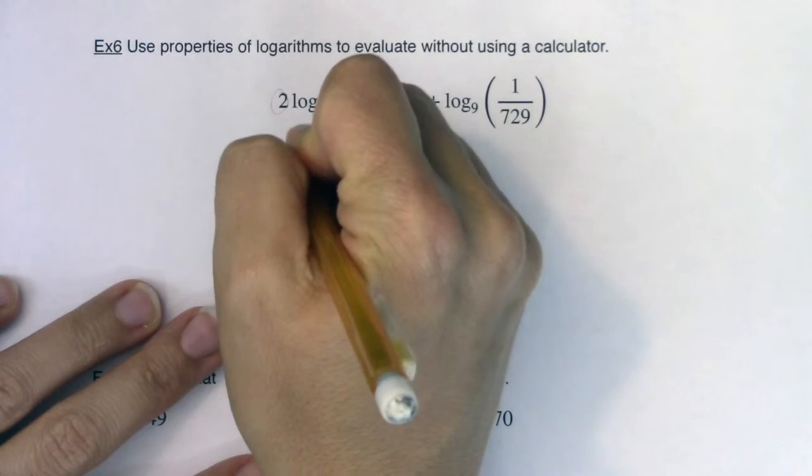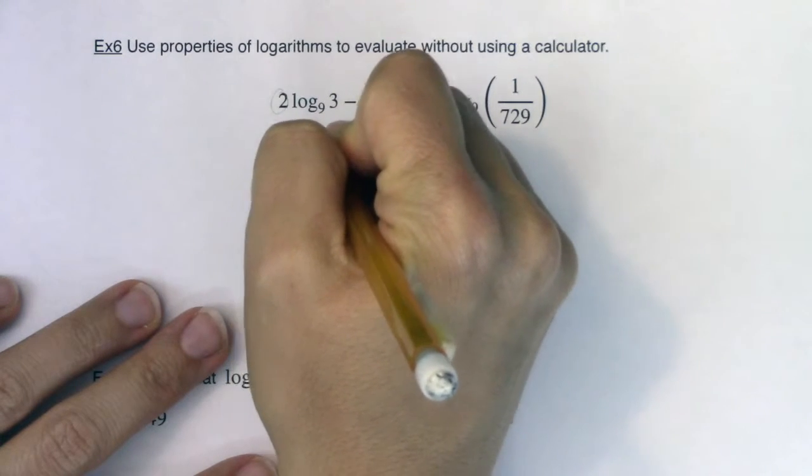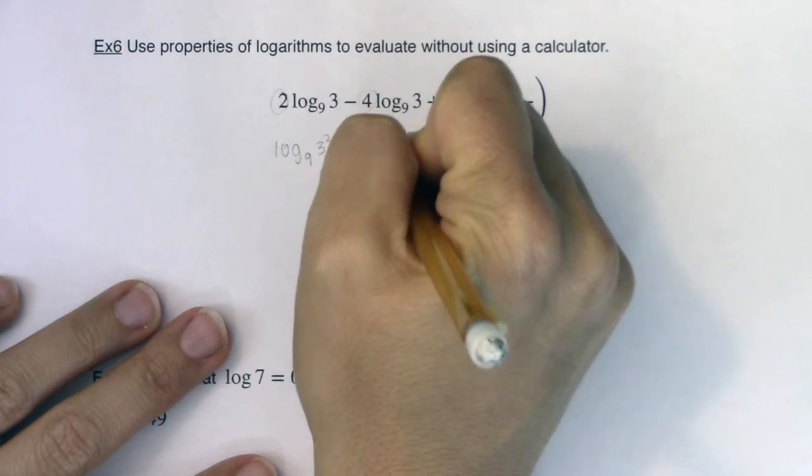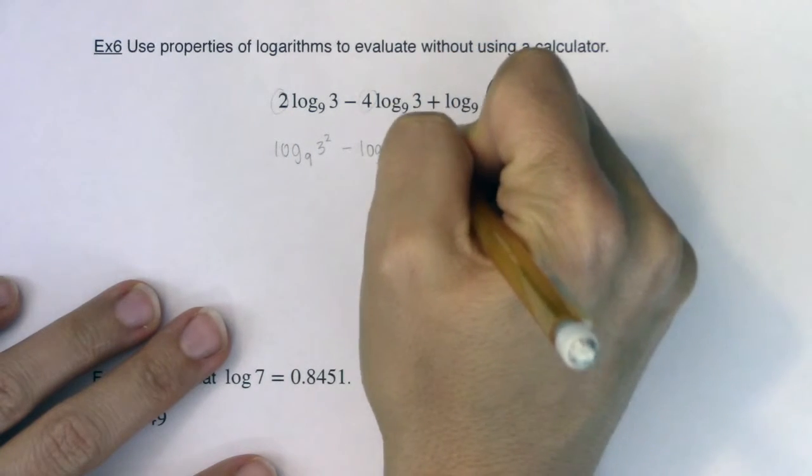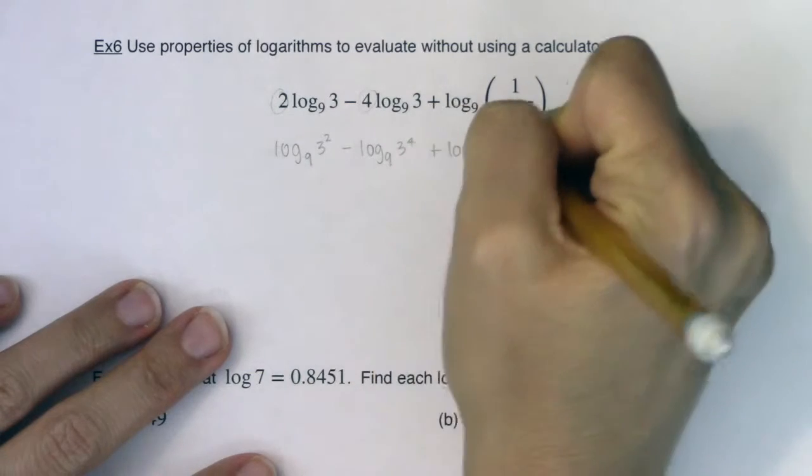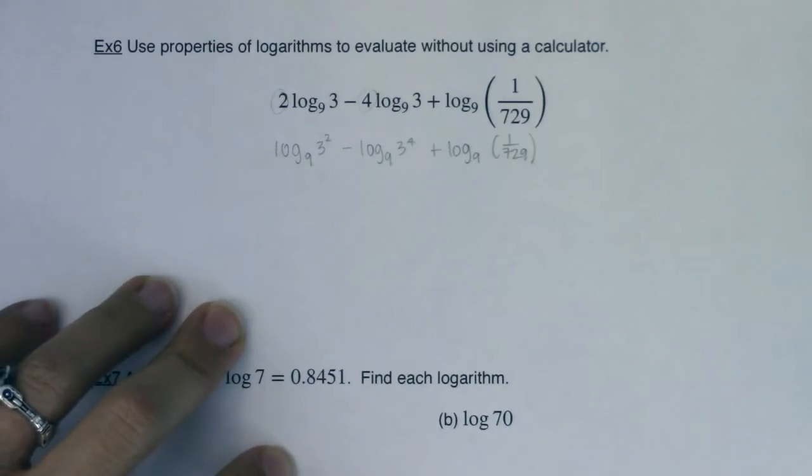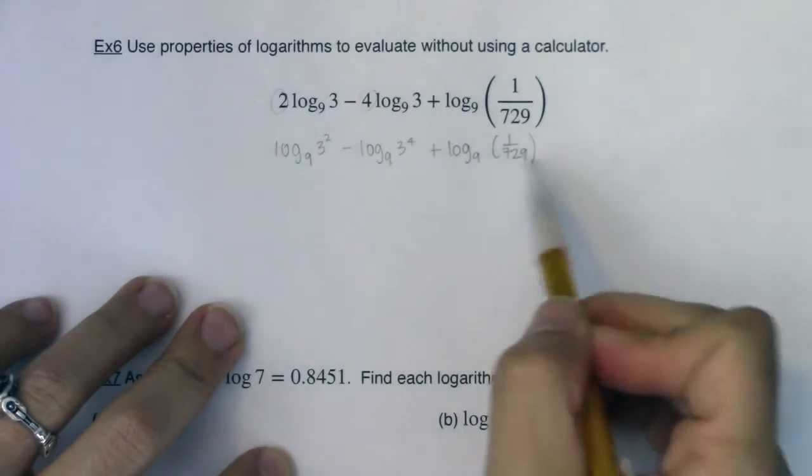But this will ultimately become log base 9 of 3 squared minus log base 9 of 3 to the 4th plus log base 9, I'm almost running out of room, 1 over 729.